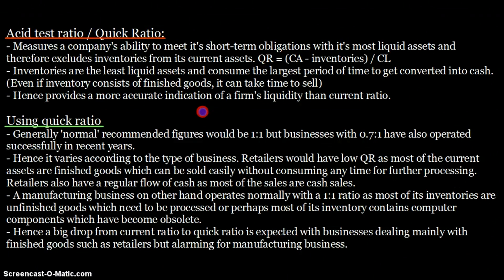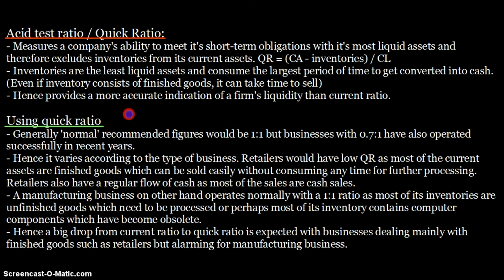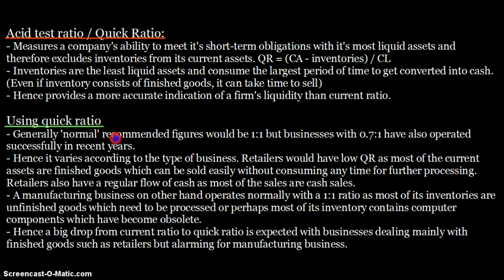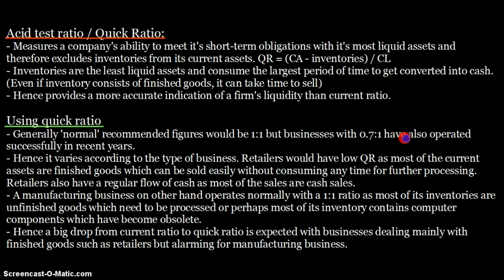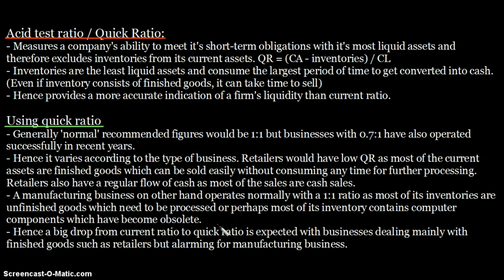Inventories consist of both finished goods and raw materials. Raw materials take more time to convert into cash than finished goods, but in both cases it takes time. That's why we exclude inventories from the quick ratio. The normally recommended figure for the quick ratio is 1:1, although businesses with 0.7:1 have also operated successfully in recent years.